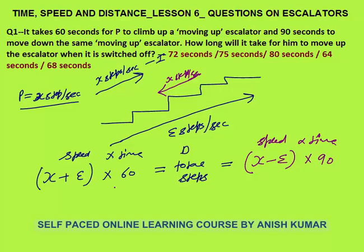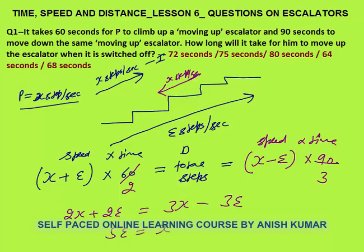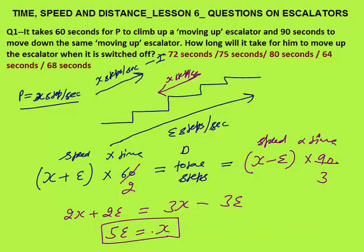Now we can solve: make both equations equal on the right side. (x plus e) times 60 equals (x minus e) times 90. Simplifying: 2x plus 2e equals 3x minus 3e, which gives 5e equals x. So x is equal to 5e.